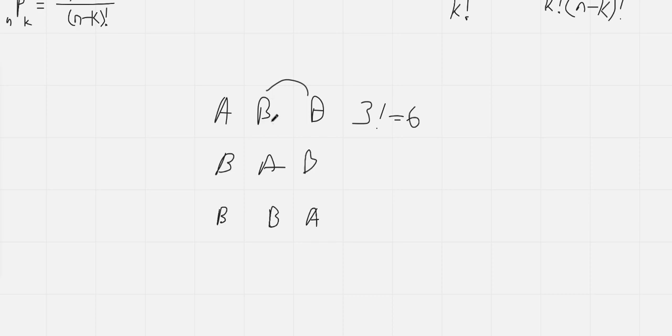Basically, if we treated them as distinct objects, let's say B1 and B2, then, yes, there are three factorial ways to arrange A, B1, and B2. But then, we can basically see that if we ignore the A, then we could have B1 and B2, or we could have B2 and B1. In other words, there's two ways to arrange them, which corresponds to the two factorial ways to arrange two distinct objects.